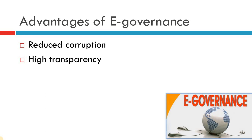Second point: high transparency. Aadhar cards, bank cards, bank accounts — every detail of an individual is linked. So there is transparency in everybody's account. Even whatever task is being done, let's say I have made a request — I can easily track at which stage my request is pending, what are the differences, what are the requirements. So there is transparency in the system. We can clearly get to know what is happening with our document after the request.